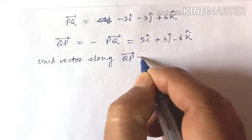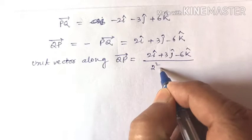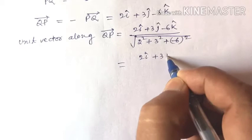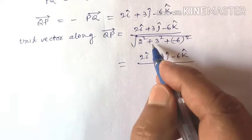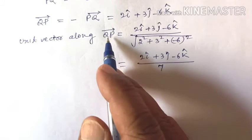Unit vector along QP equals (2i plus 3j minus 6k) divided by its magnitude. The magnitude equals square root of 2 squared plus 3 squared plus minus 6 squared, which is square root of 4 plus 9 plus 36, equals square root of 49, equals 7.